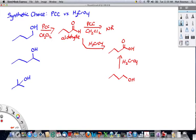That is the difference between PCC and H2CrO4. If you want an aldehyde, you have to use PCC. If you want a carboxylic acid, you have to use chromic acid.